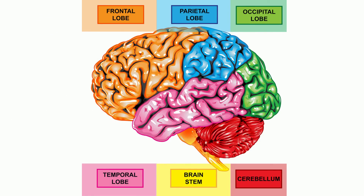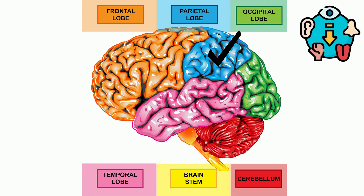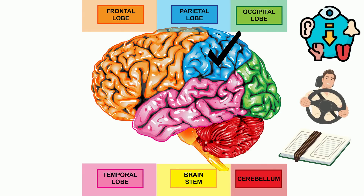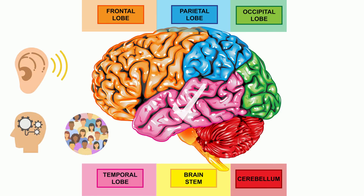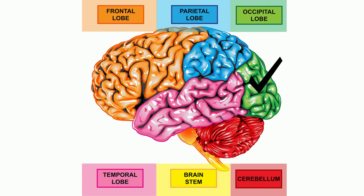The parietal lobe is located at the top of the cerebrum and is responsible for processing sensory information. It also plays a role in spatial awareness and language. The temporal lobe is located on the side of the cerebrum and is responsible for processing auditory information and plays a role in memory and social behavior. The occipital lobe is located at the back of the cerebrum and is responsible for processing visual information.